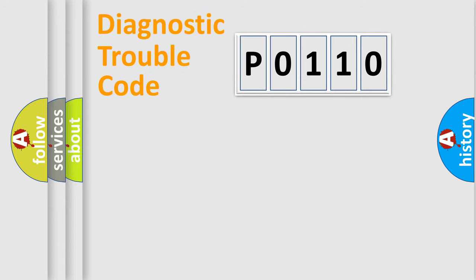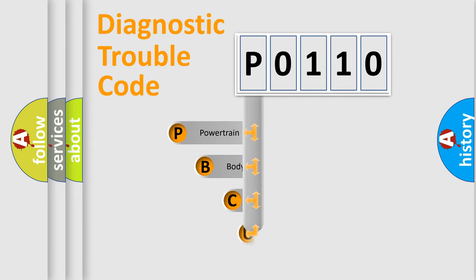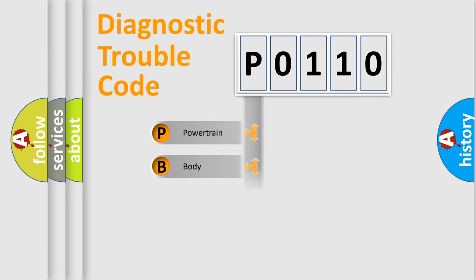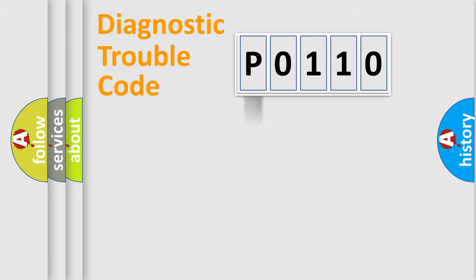First, let's look at the history of diagnostic fault code composition according to the OBD2 protocol, which is unified for all automakers since 2000. We divide the electric system of an automobile into four basic units: Powertrain, Body, Chassis, and Network.